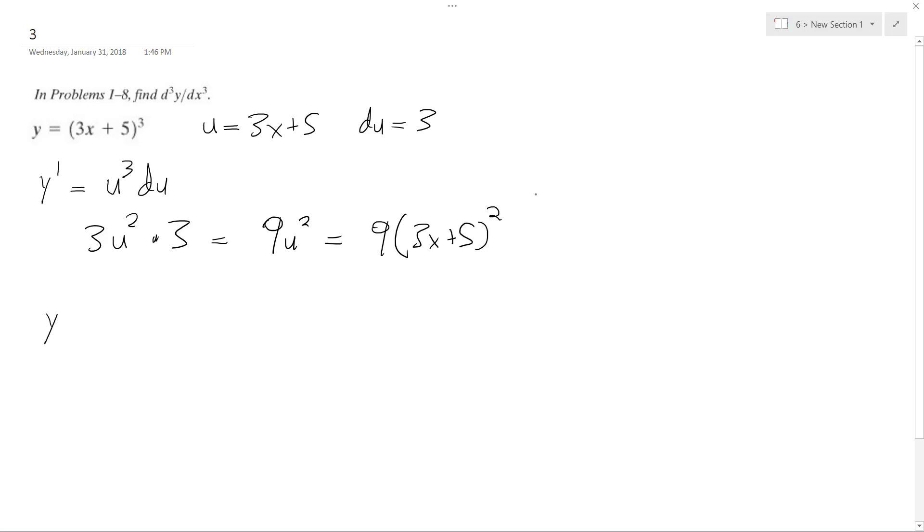Then we do the same thing for the second derivative. y prime is 9u squared, so before we do everything, we get 2 times 9u, and then times du.